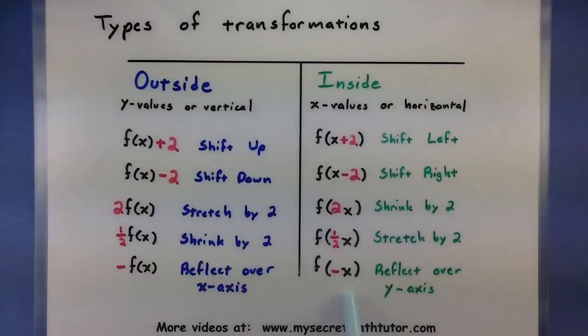When you put the negative sign on the inside of the function, it affects it in the horizontal direction, so it flips it right over the y-axis.